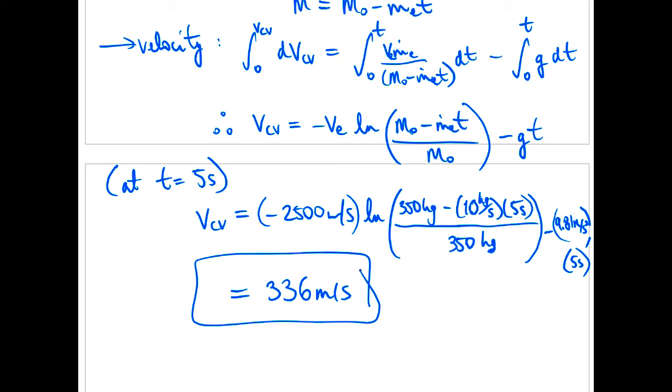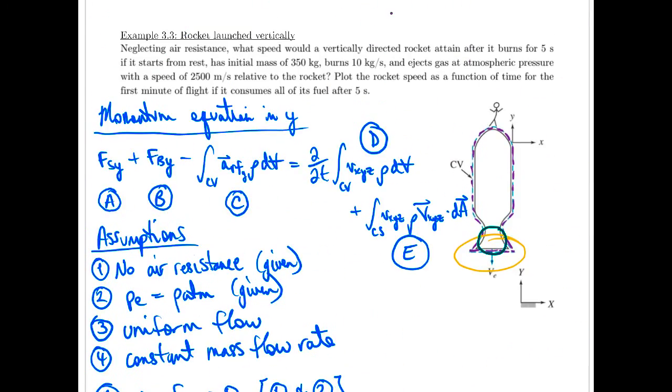This expression we've derived here. I'll scroll back up to the question. So we remember it burns this fuel for five seconds. And it says it consumes all of its fuel after the five second burn. But we're asked to plot this for the first minute of flight. So basically what we've derived here, that's valid for when it's burning its fuel for the first five seconds. So to find the velocity after those five seconds, we can do another quick balance below here. I'll scroll back down.